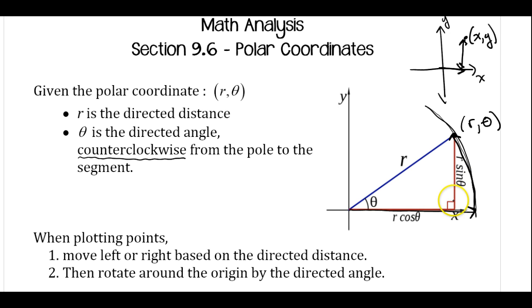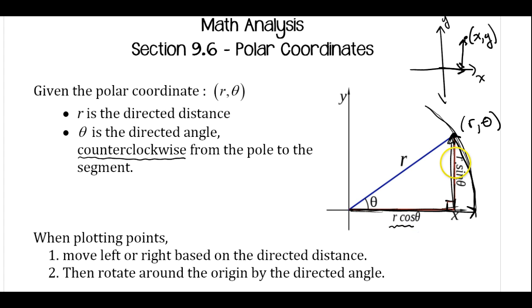We can see that we get a little right triangle if we look at the rectangular way to get there. So this would be my x, and this would be my y. Using right triangle trig, we get that the x distance would be r cosine theta, and the y distance would be r sine theta. We're going to use that later to convert between rectangular and polar coordinates.